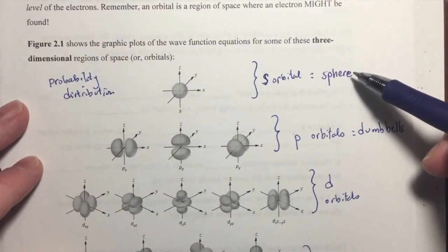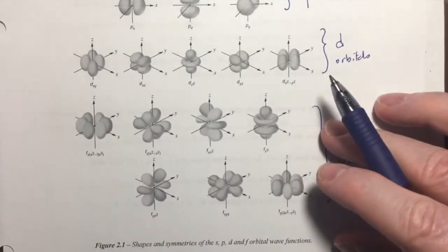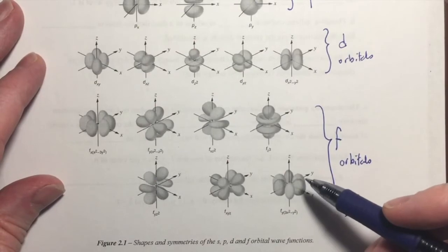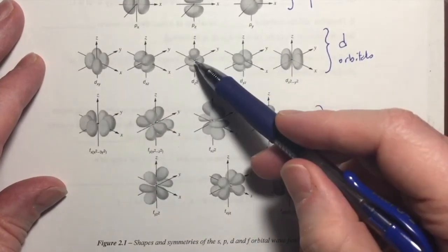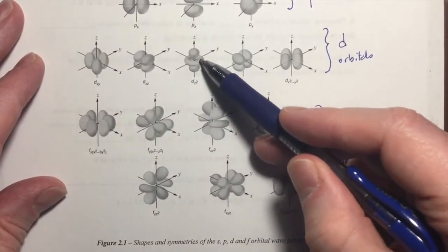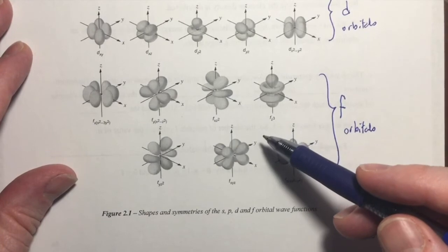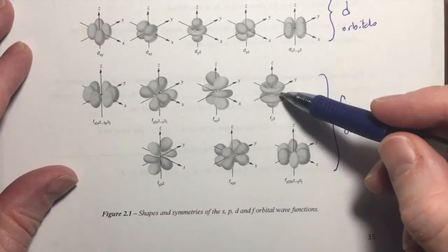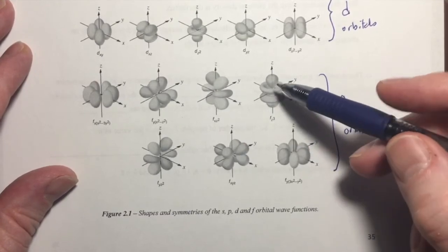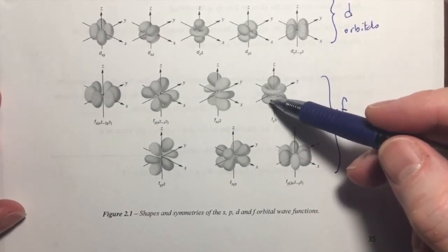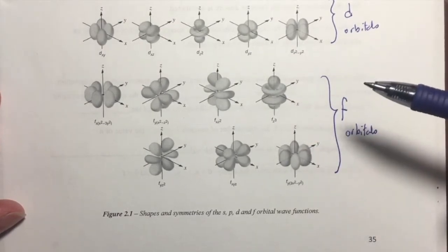So, s orbitals are spherical, p orbitals are dumbbell shaped, and then we get into d and f orbitals, and their shapes can be quite complex. We start to look like there are four lobes, like a clover. That looks like a dumbbell with two lobes, and then a donut around the middle of it. Very odd. And then some of these f orbitals that are so complex, they look like balloon animals that some clown would make at a party. But again, these are three-dimensional graphs of a three-dimensional region of space that provides the probability of finding an electron somewhere in all of this space that is defined by that wave function.